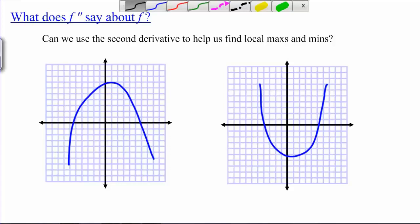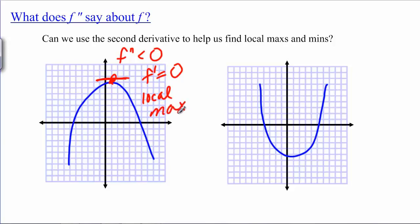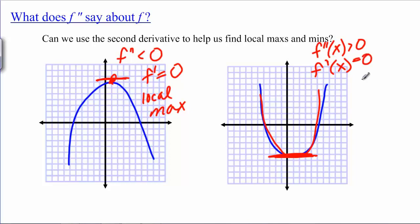Why does this make sense? Well, if the second derivative is negative, then you have a graph that looks something like this. If it's concave down and we also know that the first derivative is equal to zero, then we're going to have a local max. Similarly, if F double prime of X is greater than zero — so we have something that's concave up — and we also know that F prime of X is equal to zero, then we have a local min.